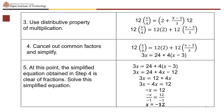Distribute 4 to (x minus 3) to get 4x minus 12. So 3x equals 24 minus 12 plus 4x, which is 3x equals 12 plus 4x. Then 3x minus 4x equals 12, giving minus x equals 12. Dividing both sides by negative 1, x equals negative 12.